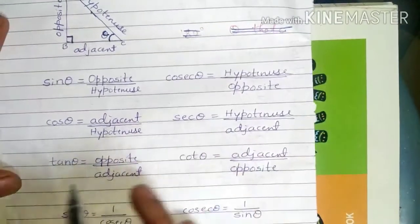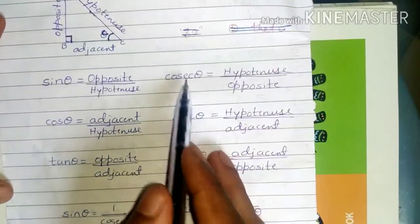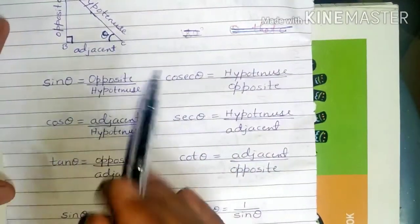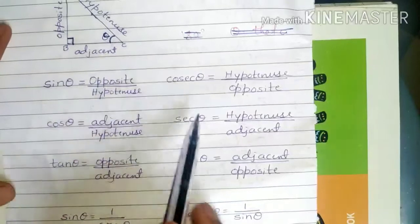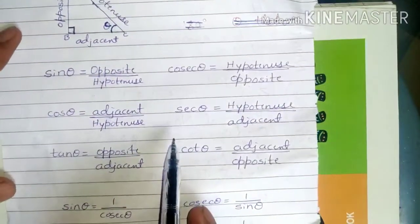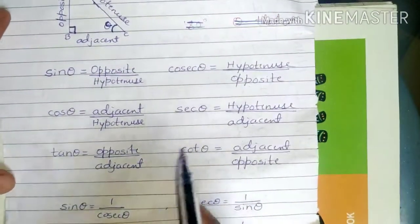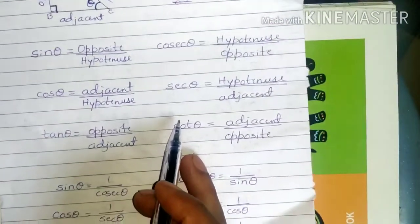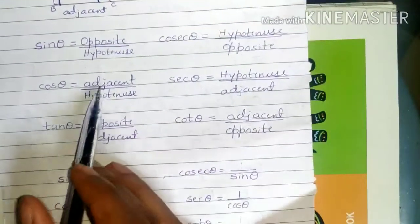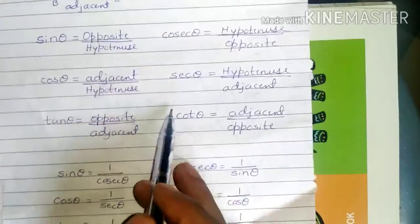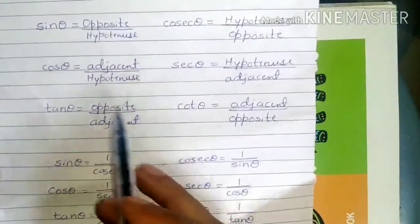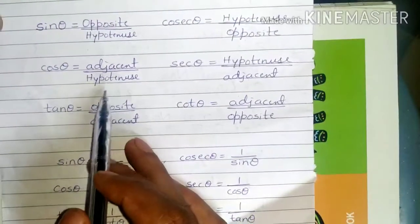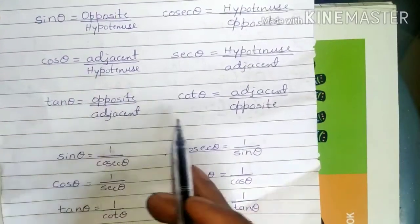So all these are called trigonometric functions. These concepts we have studied in 10th standard, but you should know about them — opposite, adjacent, and hypotenuse.